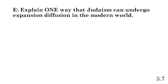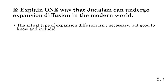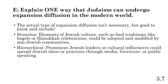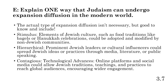Part E: explain one way Judaism can undergo expansion diffusion — aka grow — in the modern world. Think of communication technologies, globalization, time-space compression, and transportation technologies. You don't need to name the diffusion type, but it helps. Stimulus diffusion example: elements of Jewish culture like bagels or Hanukkah celebrations could be adopted and modified by non-Jewish communities. Hierarchical diffusion: prominent Jewish leaders or celebrities like Jerry Seinfeld could spread Jewish ideas through media or public speaking. Contagious diffusion: online platforms and social media like YouTube could allow Jewish traditions and teachings to reach a broader global audience, encouraging wider engagement with Judaism.